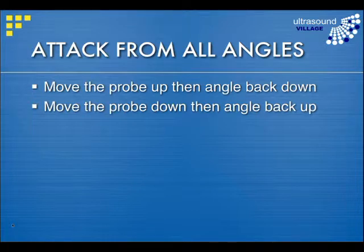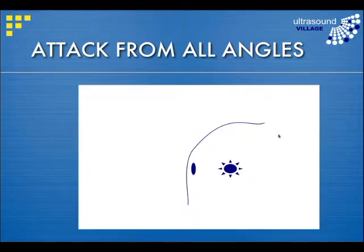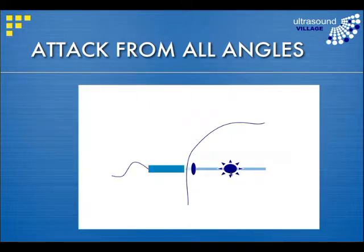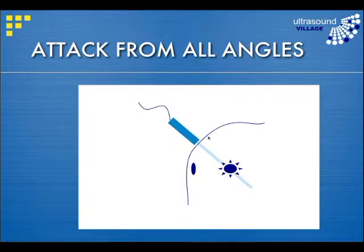Don't forget the body is a three-dimensional structure. If you've got a particular area you're trying to look at but something's in the way, move the probe up and angle back down, or move it down and angle back up. If here is our object of interest but we've got a rib, gas, or something blocking our view, move the probe up and angle down. In particular when trying to look at the heart, you need to make very small movements to get between the rib spaces.